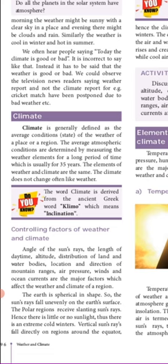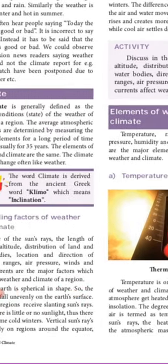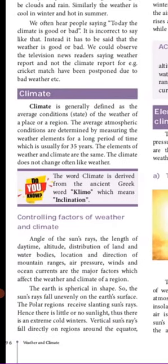What are the controlling factors of weather and climate? They are: the angle of the sun's rays, the length of the daytime, altitude, distribution of land and water bodies, and location and direction of mountain ranges. These are the major factors which affect the weather and the climate.